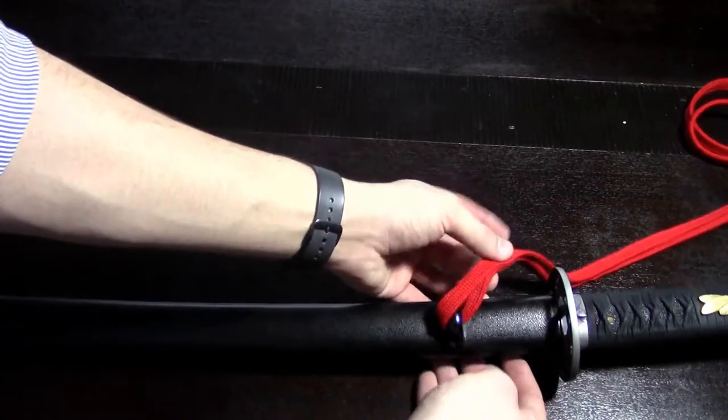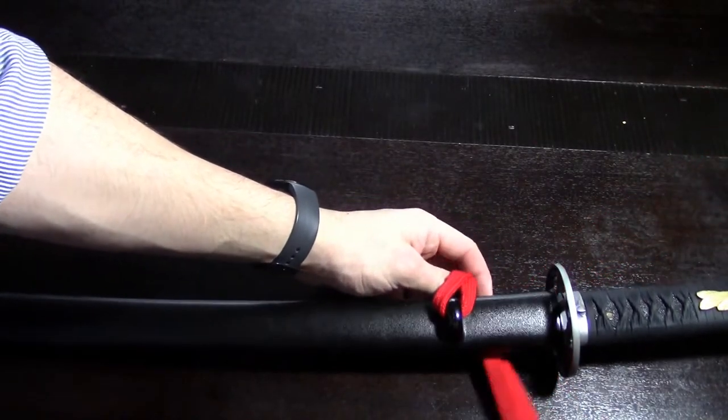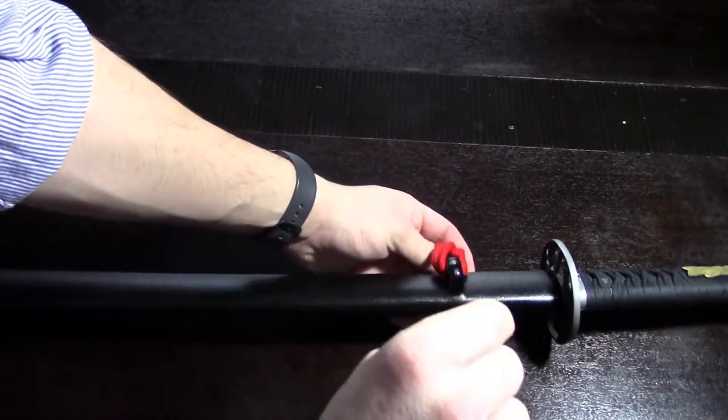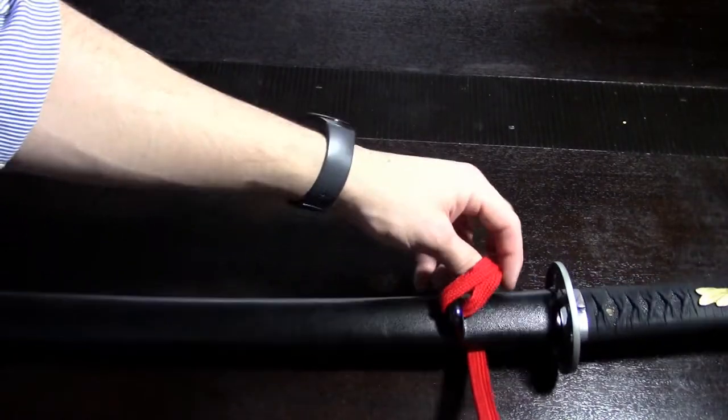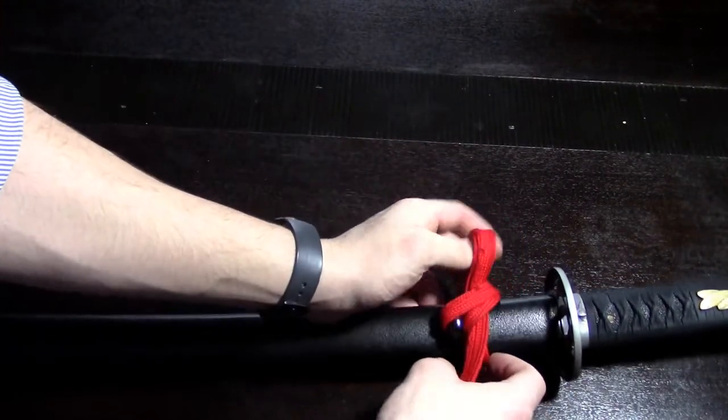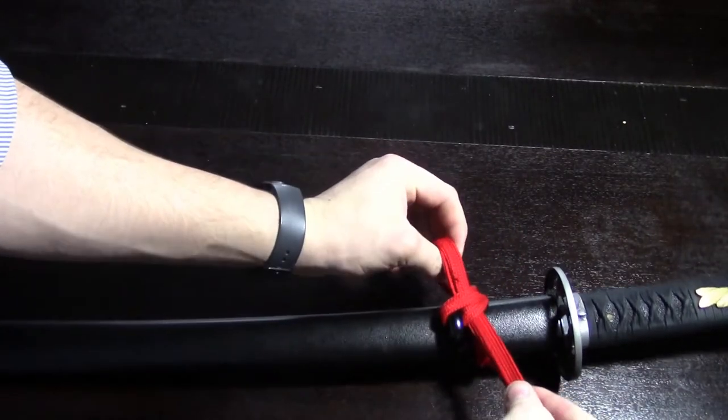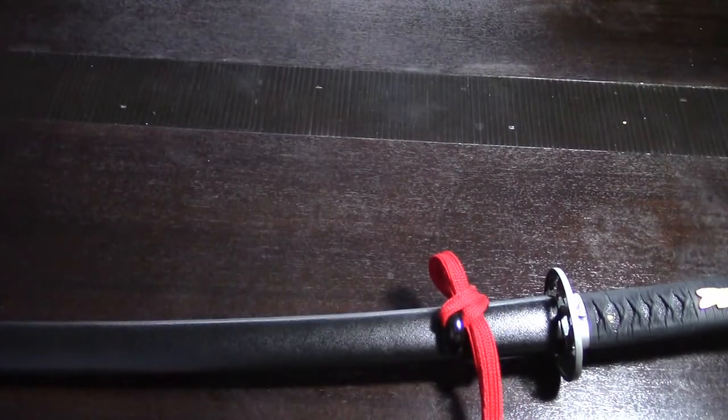Now from here, we go around. Make sure once again that it is all stacked on each other to where it's not twisted. Make a loop and pull it through, just like this. And there's one.